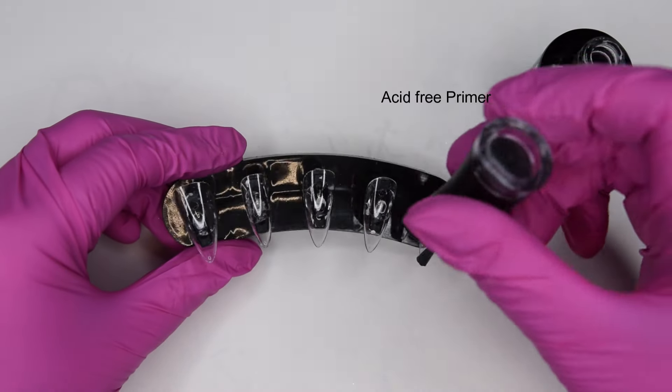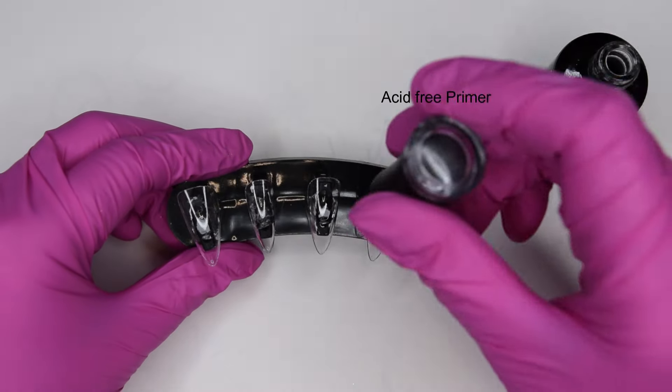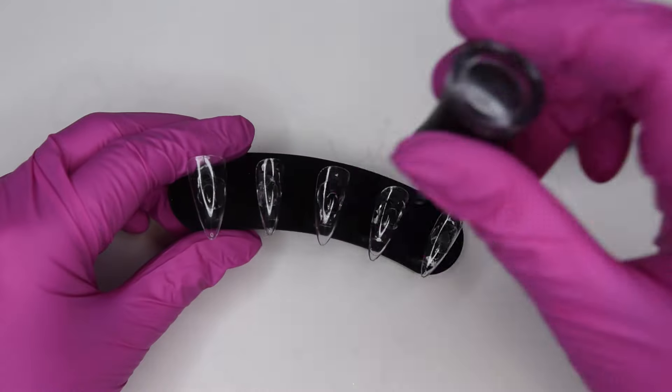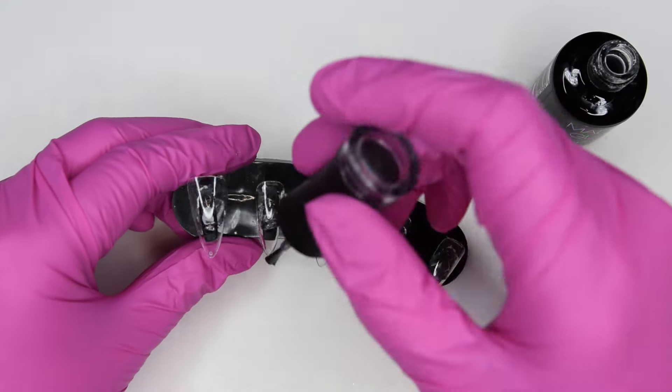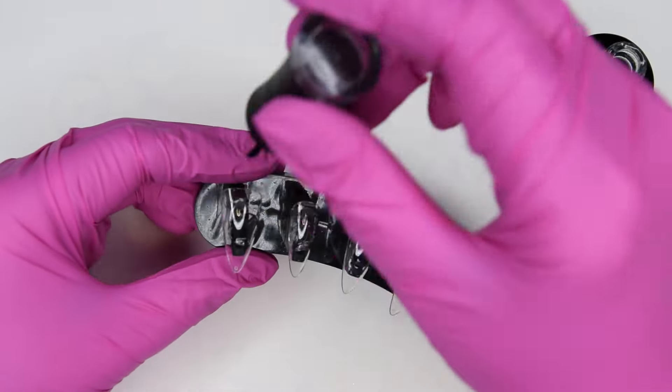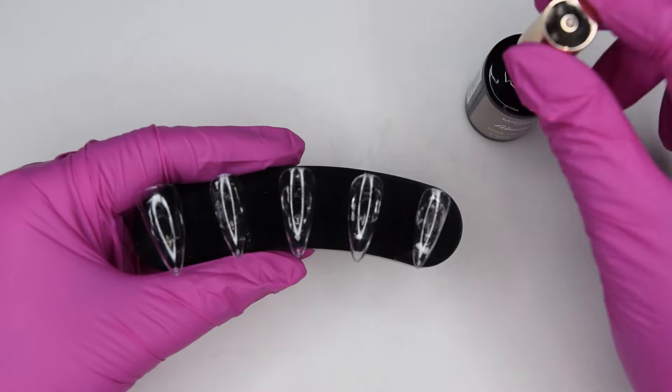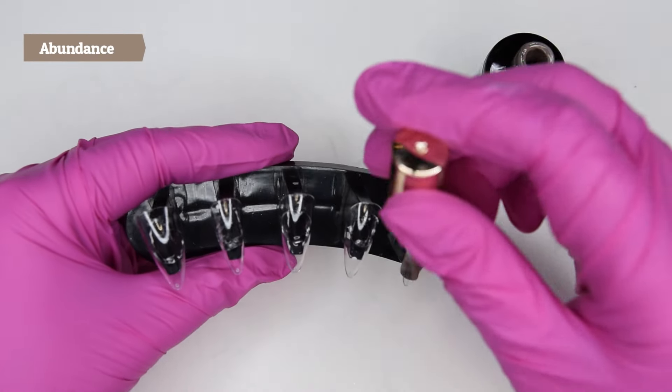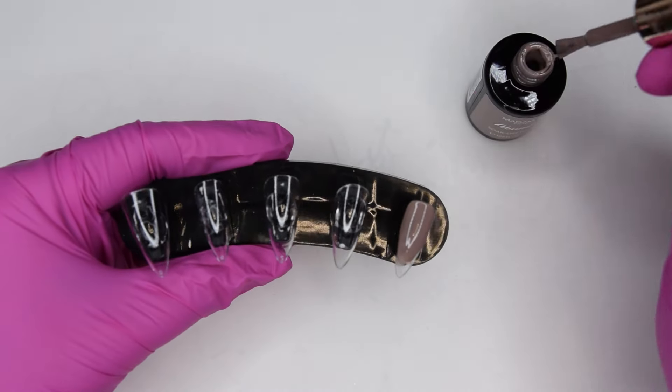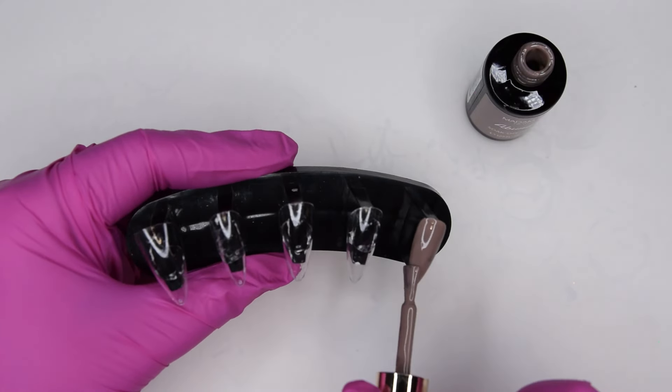I start out just applying the primer. I didn't go in with a base here. I only apply the primer. It works. And then I go in with the Abundance color. I love the texture of this gel.